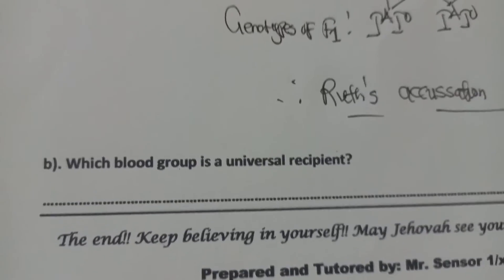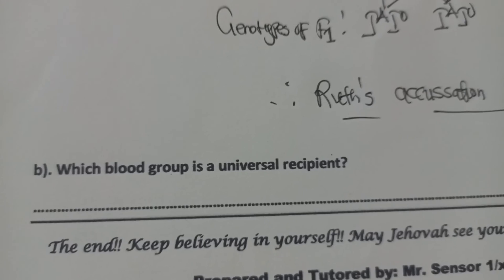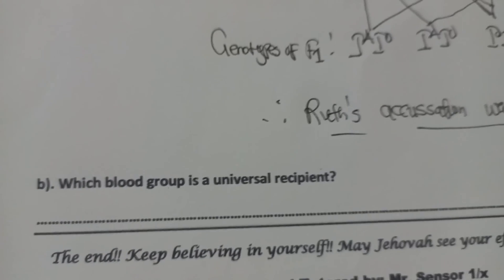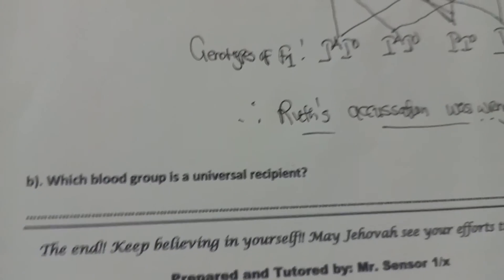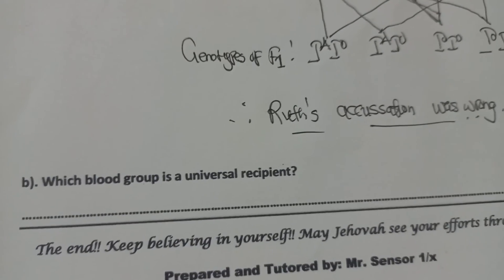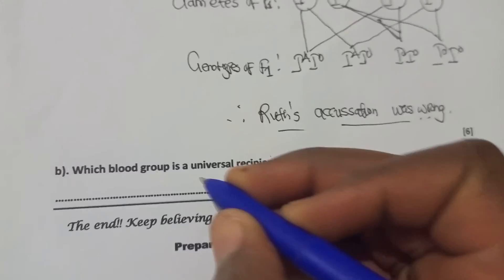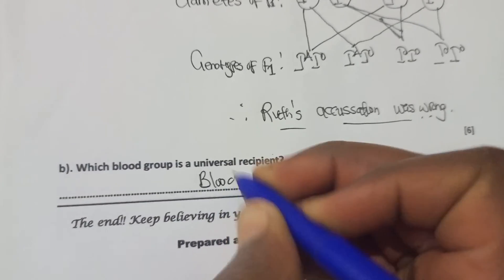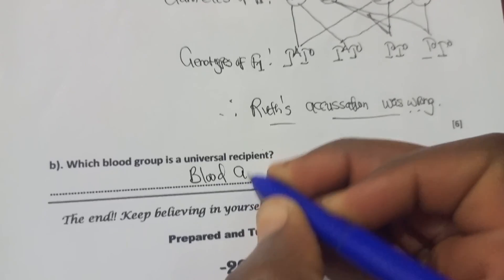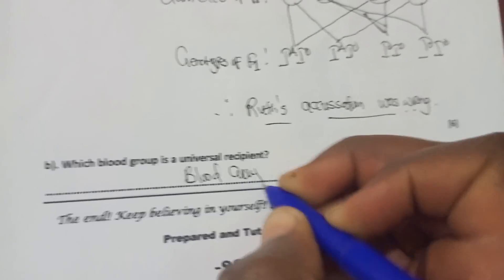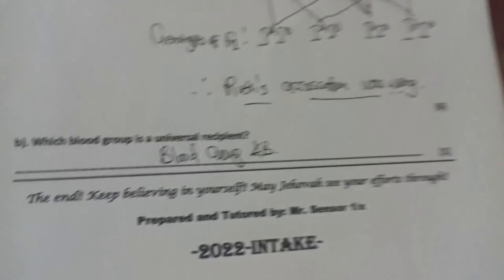They are also asking: which blood group is the universal recipient? Remember, the universal donor is blood group O. So the universal recipient is blood group AB. This is a universal recipient.